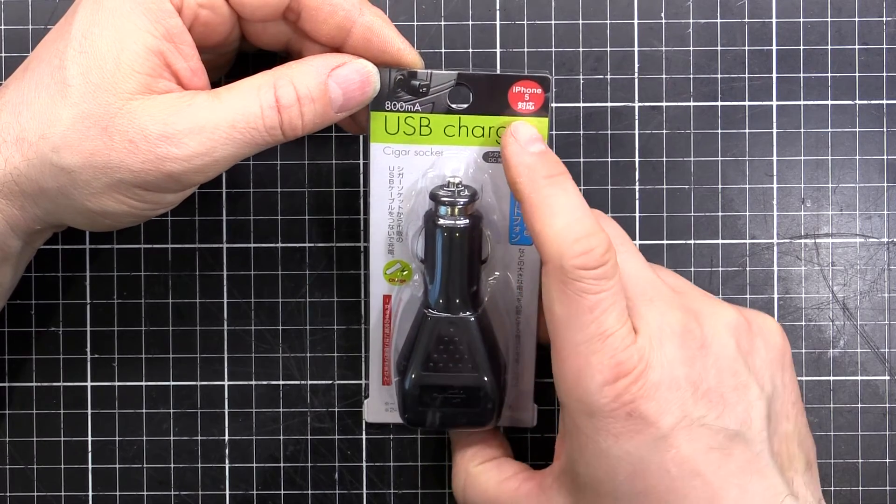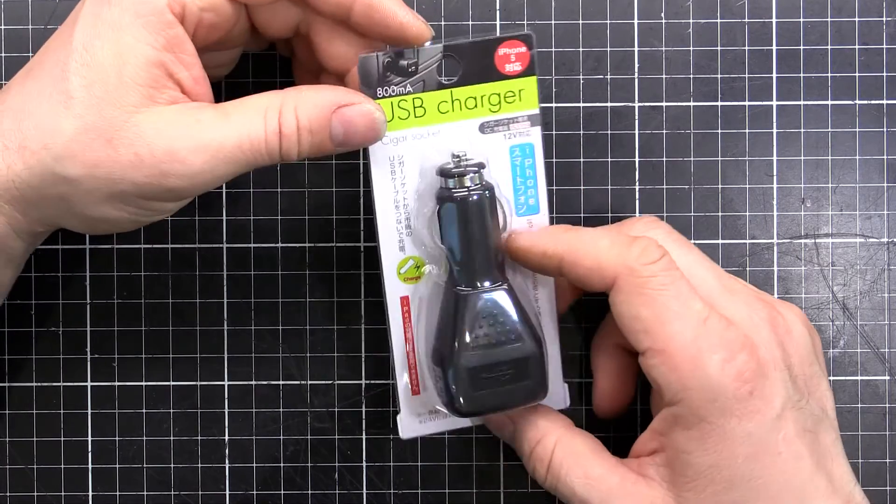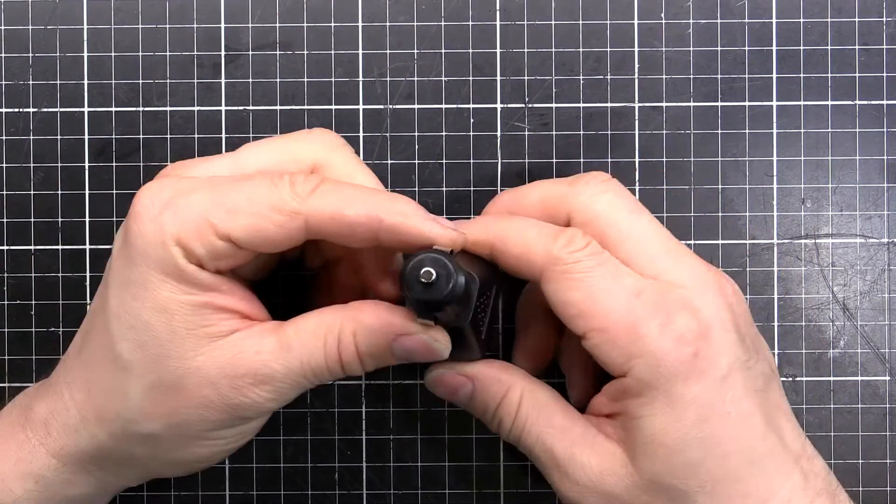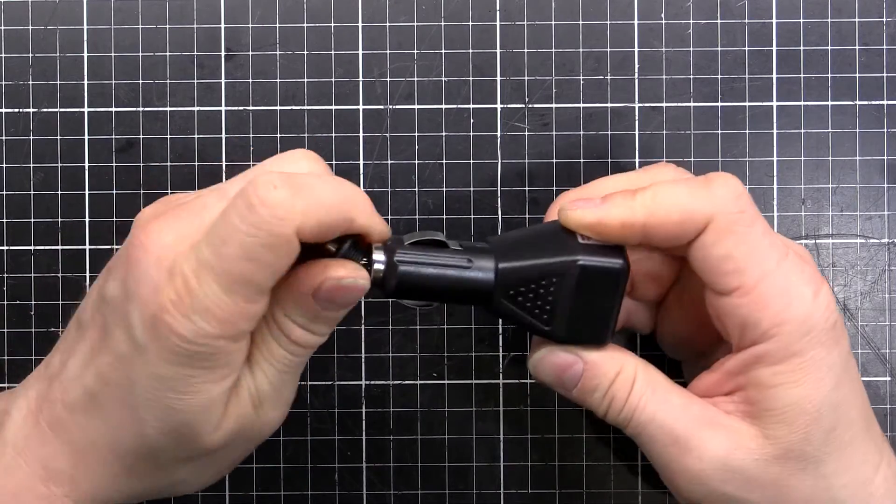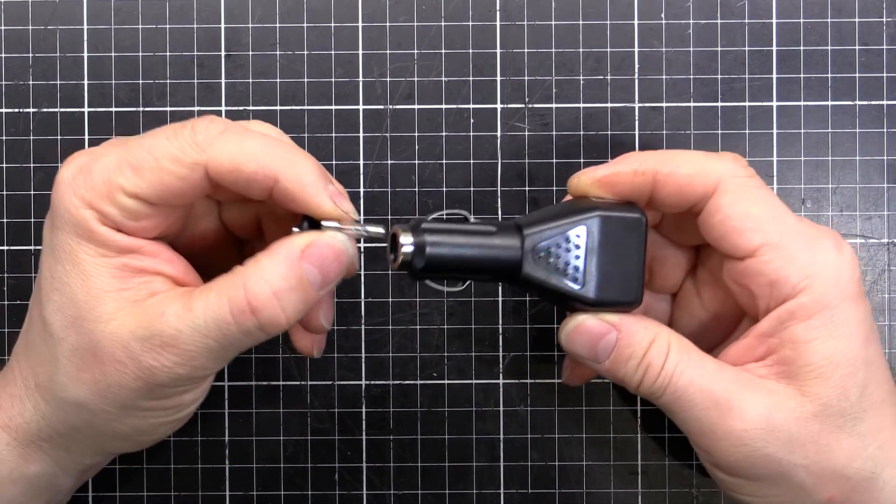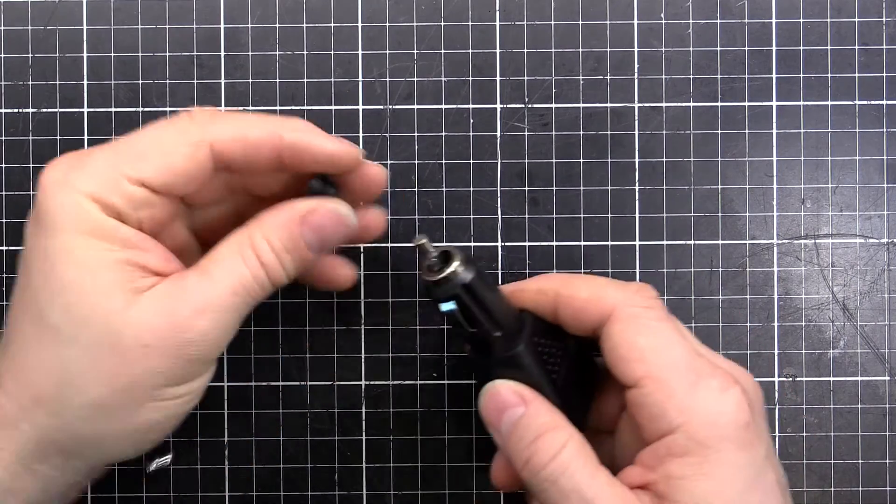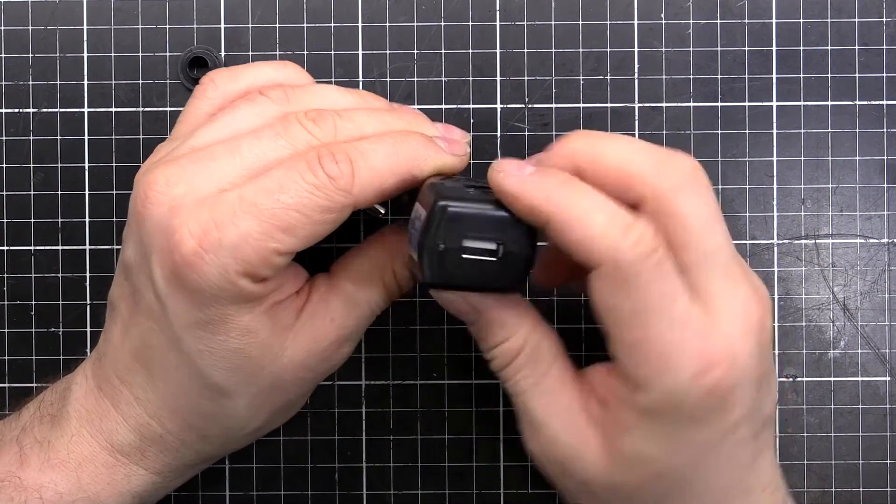I don't have an iPhone 5 but that doesn't matter. So a quick look at this thing: black injection mold plastic, cigarette lighter in the front there, looks like we can unscrew this and there's our fuse as is tradition. And then on the end we've got our LED and our USB port.